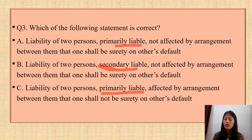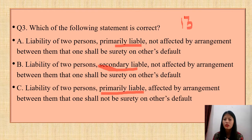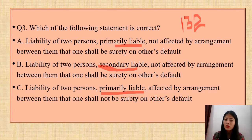Before answering, note that for questions 1 and 2, I have already made videos on Sections 129, 130, 131, and 128 — check my playlist. Question 3 deals with Section 132, which I haven't covered separately yet, so let's discuss it today. Many viewers have commented asking me to cover Section 132. The correct answer is Option A — 'liability of two persons primarily liable is not affected by an arrangement between them that one shall be surety on the other's default.' This matches Section 132 exactly.